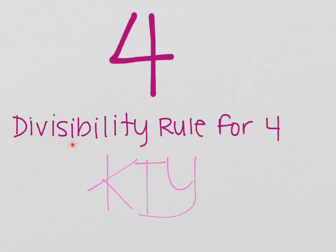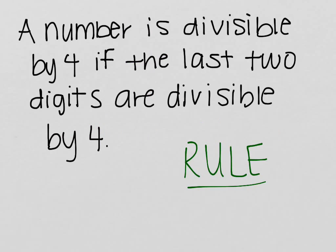Hi, today you're going to be learning the divisibility rule for 4. Let's get started. The rule states that a number is divisible by 4 if the last two digits are divisible by 4.